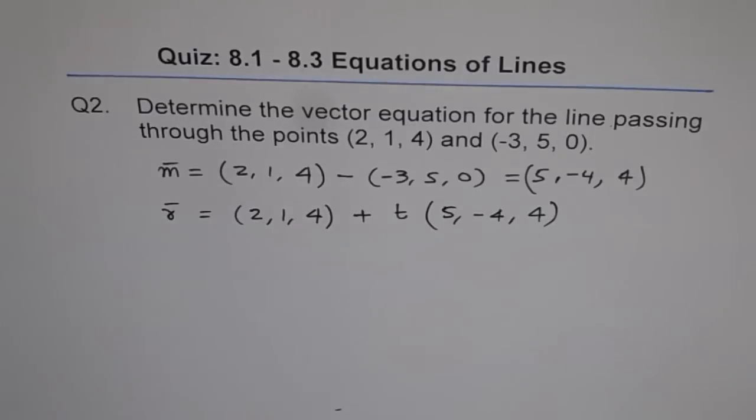So that is the vector equation for the line passing through the given points. Okay? Thank you.